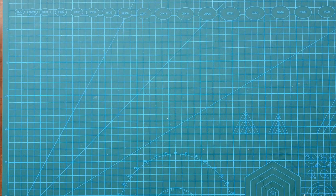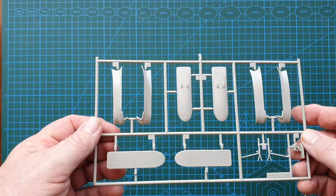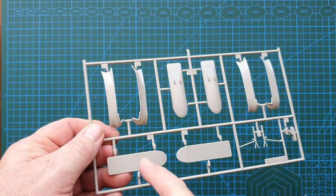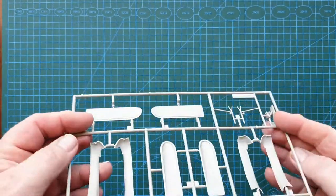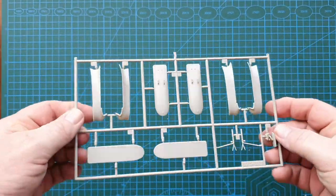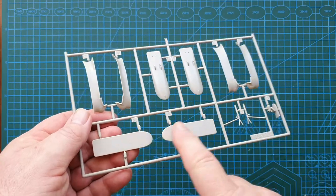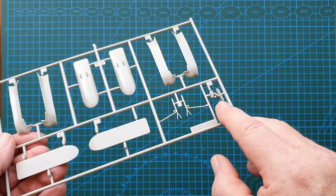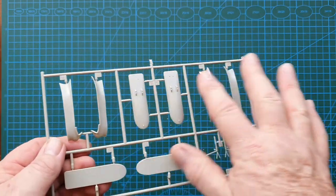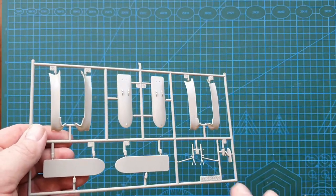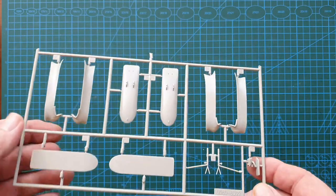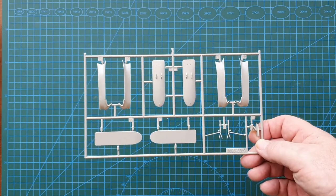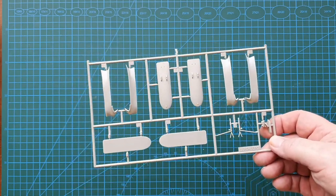Next we've got basic undercarriage and the skis. That's the bottom, that's the top, these are the skis, even that's the tail ski. The skis are a separate part so you can forget about that if you want to use wheels or be different and make it a ski version. I might be different and go for the ski version.